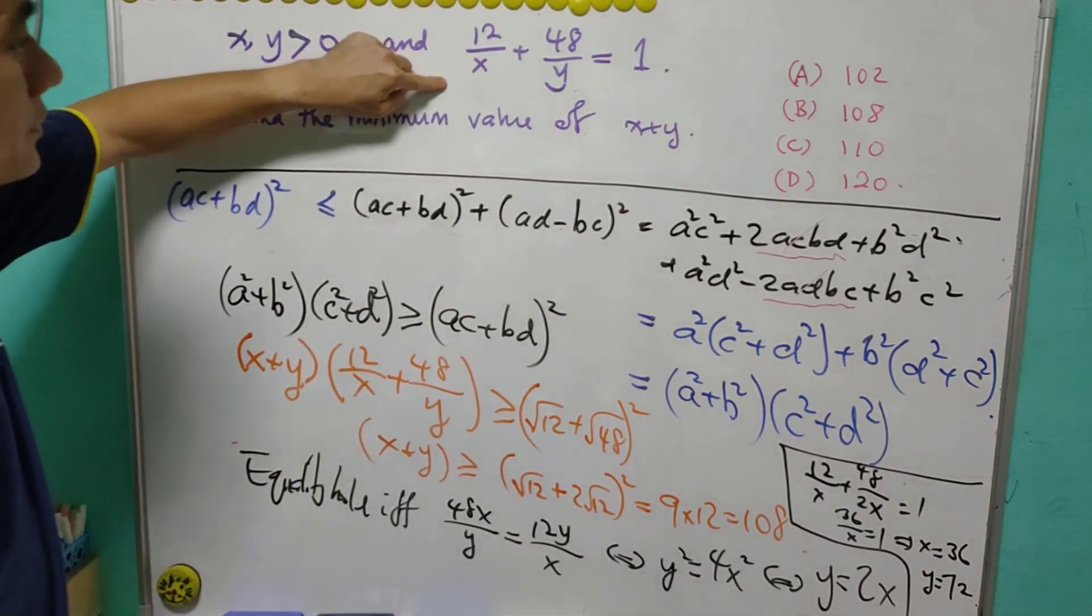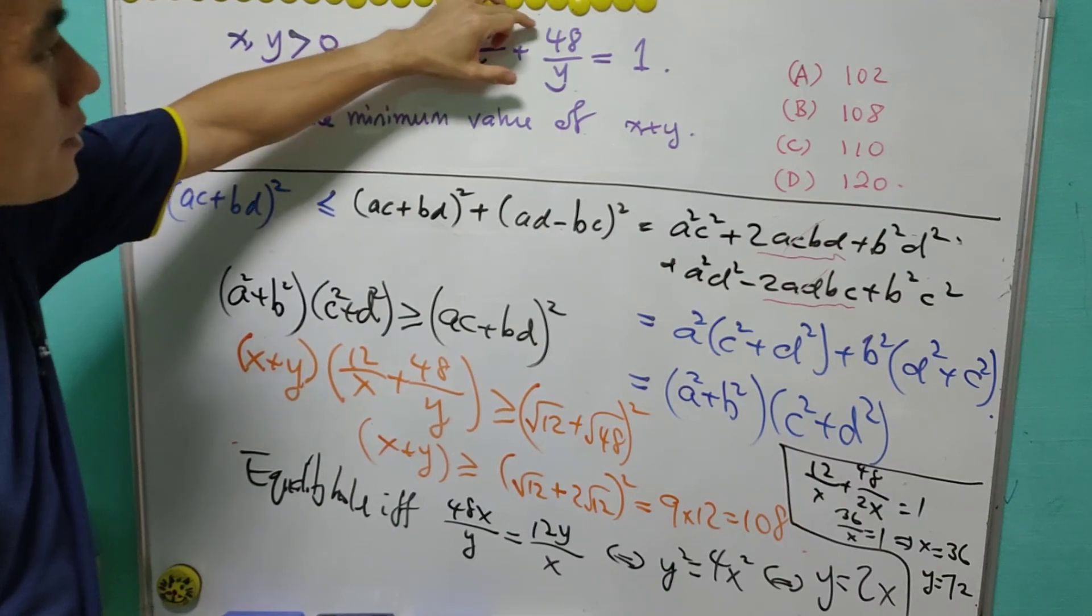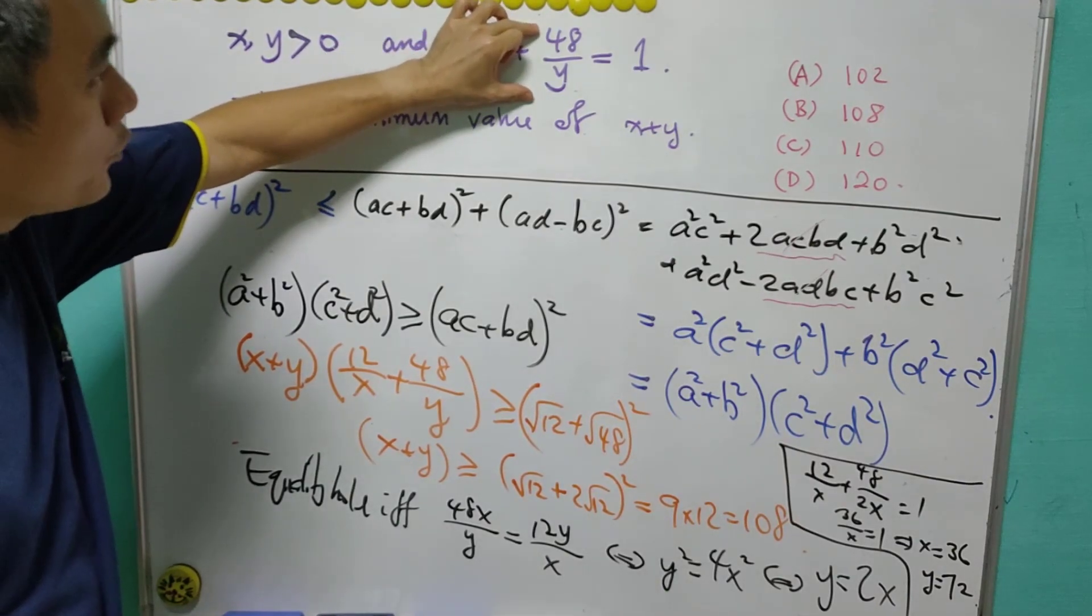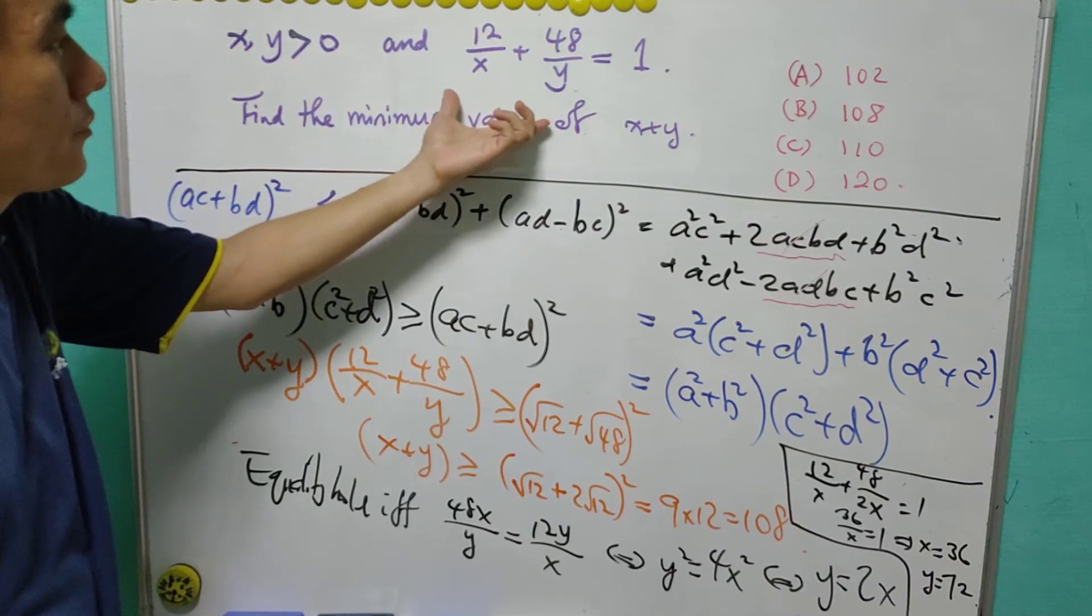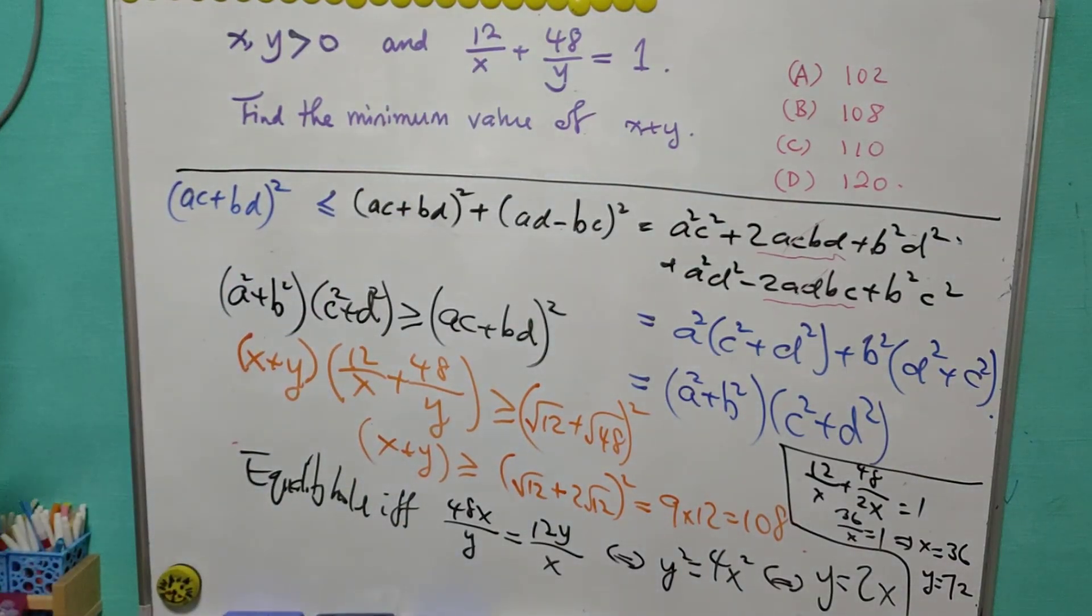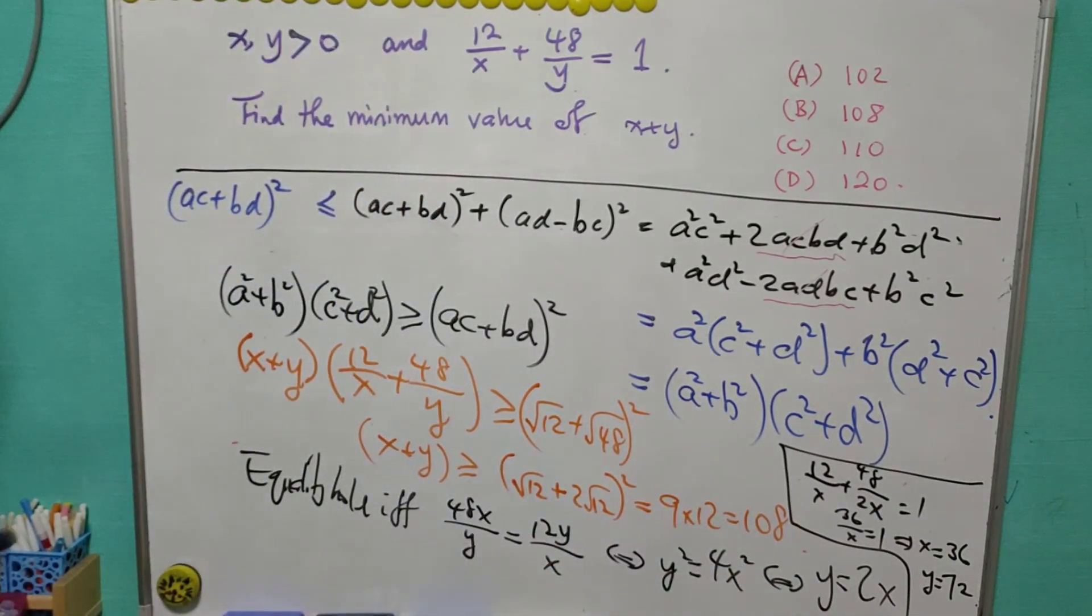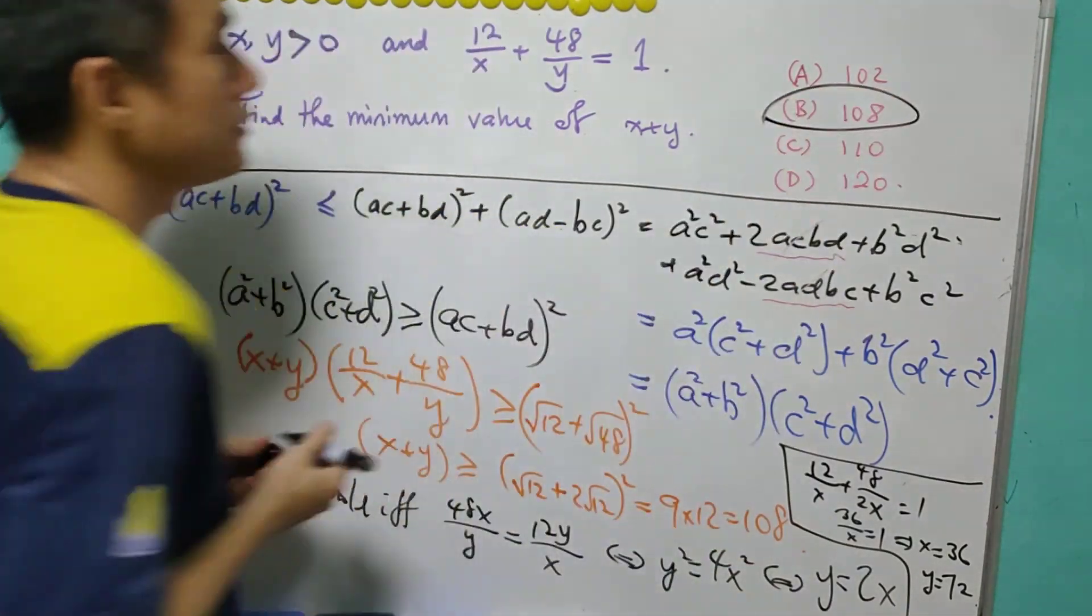When we substitute x = 36, 12/36 = 1/3. And y = 72, 48/72 = 2/3. 1/3 + 2/3 indeed equals 1, which means that the equality holds. And therefore we know that the answer must be B.